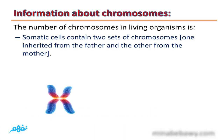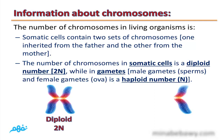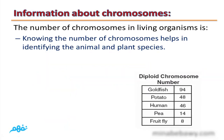Somatic cells contain two sets of chromosomes — one inherited from the father and the other from the mother. The number of chromosomes in somatic cells is a diploid number, or 2N. In gametes — sperms and female gametes (ova) — it is a haploid number, N. When a sperm fuses with an ovum, each containing half the number of chromosomes, they combine to form a zygote containing the full diploid number. Knowing the number of chromosomes helps in identifying animal and plant species.